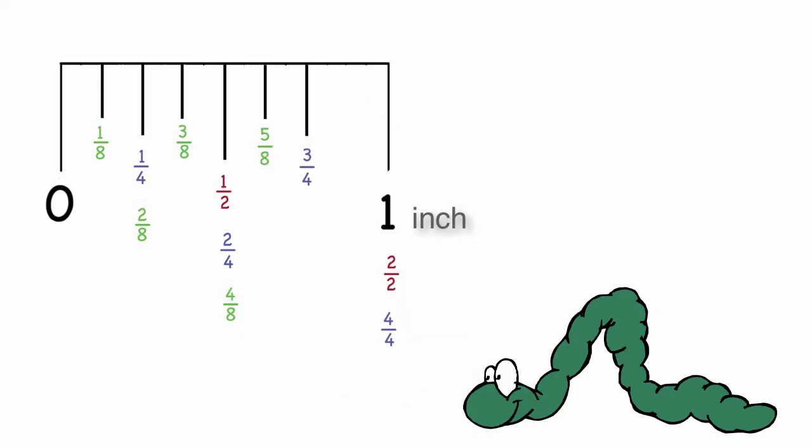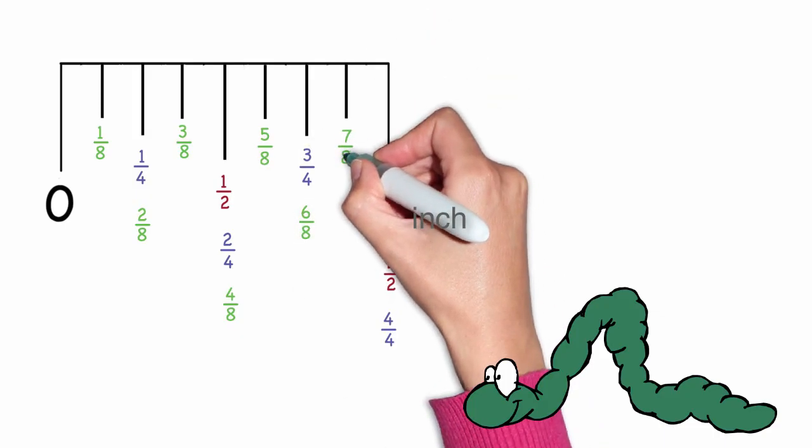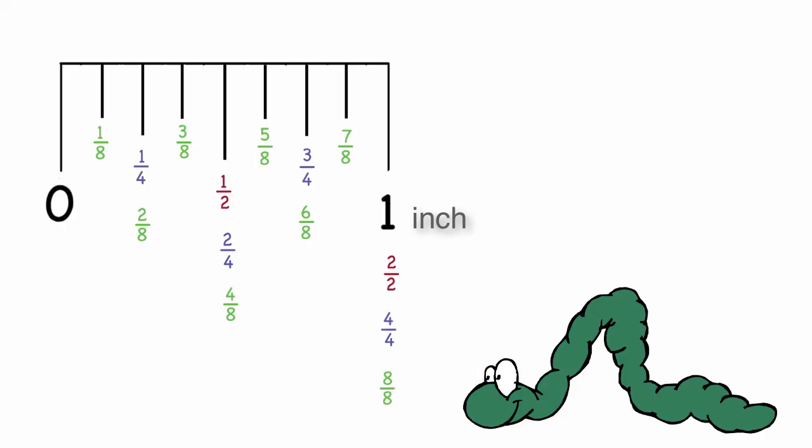five-eighths, six-eighths, which simplifies to three-fourths, seven-eighths, and eight-eighths, which simplifies to one.